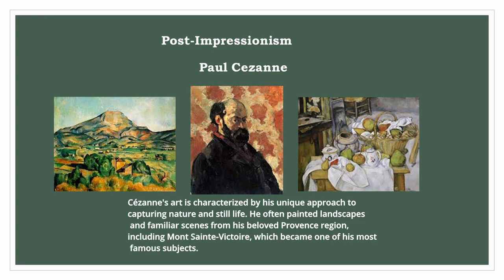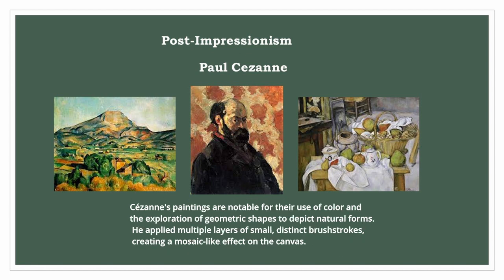Cézanne's art is characterized by his unique approach to capturing nature and still life. He often painted landscapes and familiar scenes from his beloved Provence region, including Mont-Saint-Victoire, which became one of his most famous subjects. His paintings are notable for their use of color and the exploration of geometric shapes to depict natural forms. He applied multiple layers of small, distinct brush strokes, creating a mosaic-like effect on the canvas.